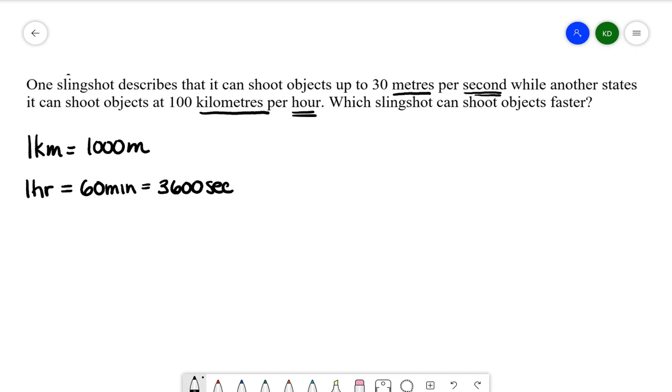Where I want to start is with slingshot one. Slingshot one is being written in meters per second. I want to rewrite that in kilometers per hour so that I can compare the two speeds.